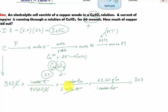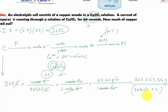Notice how moles of copper cancel out and we can now simplify this to get our answer: 360 × 1 × 63.55 grams of copper, divided by 96,500 × 2 × 1. That will give us 0.1185 grams of copper. So this is how much copper is being plated out.